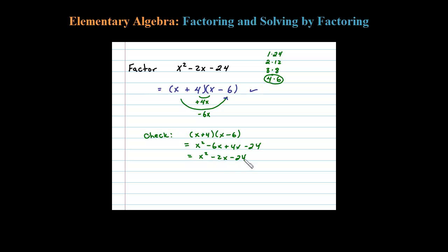It checks out. So let's go back and erase this. All right, so x plus 4 times x minus 6 is our final answer. That's the factored form for this particular trinomial.